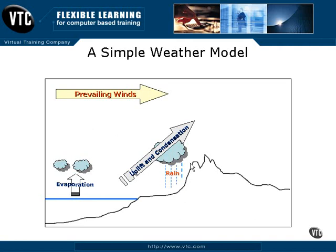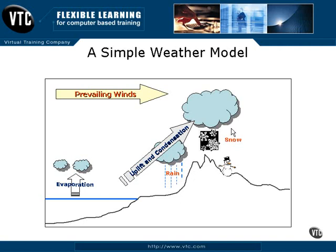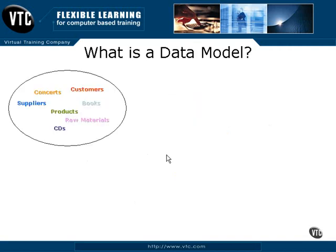Therefore, on the seaward slope of the mountain range, you get rain. And obviously, the higher up you get into the mountain range, it starts to get really cold, so the rain turns into snow. It's logically obvious that on the other side of that mountain range, the clouds have dumped all their rain and snow. There's no moisture left, so you're very likely to get an arid climate on the wrong side of the mountain range. That is a simple weather model.